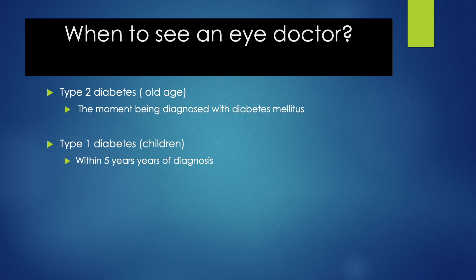The key point for diabetic eyes is to treat them at the most appropriate time. Hence, screening of the eye is very important even when the eyesight is still good. Occasionally, patients do not realize they have poor vision in one eye and come very late after both eyes are involved. For type 2 diabetes, they need to see the eye doctor the moment they are diagnosed. Whereas for type 1 diabetes, they need to see the eye doctor for screening within 5 years of diagnosis.